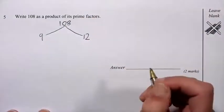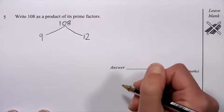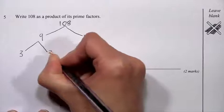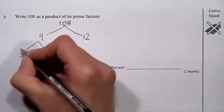Now, neither 9 nor 12 are prime numbers, so I need to break them down a bit further. I can write 9 as 3 times 3. 3 is a prime number, so I'll put a ring round it.